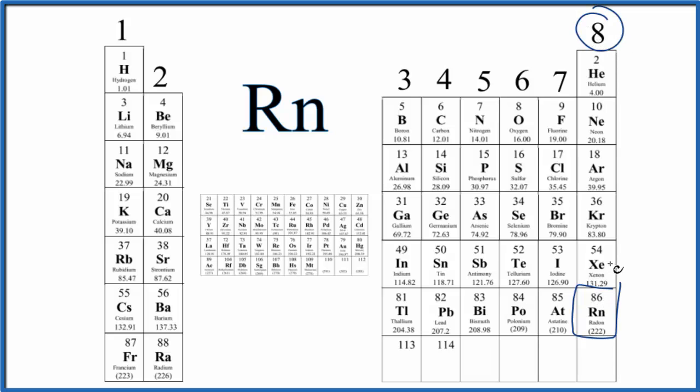All of these elements here have 8 valence electrons, with the exception of helium. Helium only has 2. It's still considered a noble gas, though.